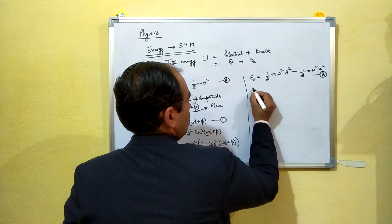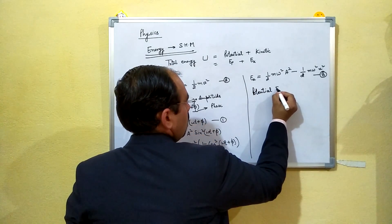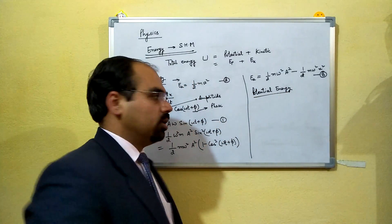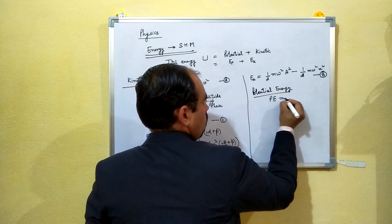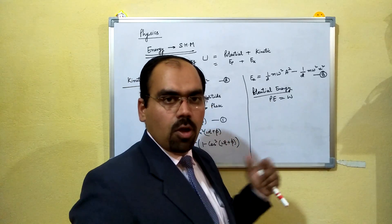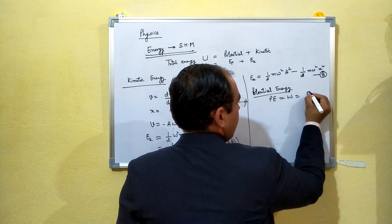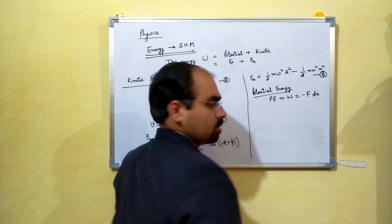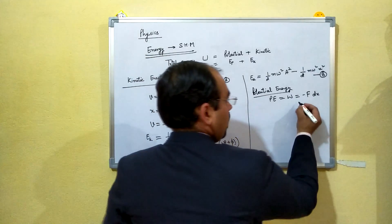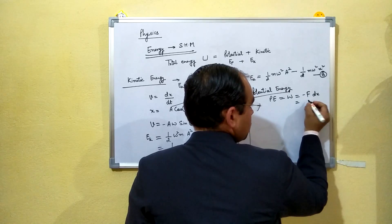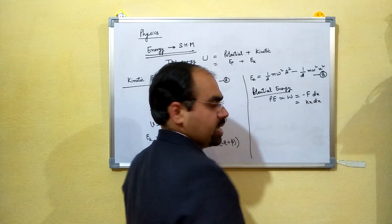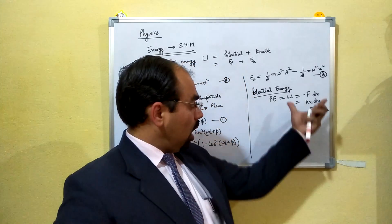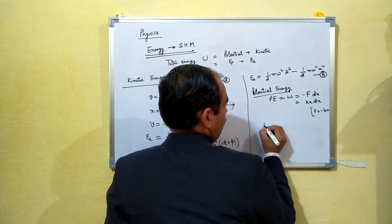Now let's get the value of potential energy. Work done can be stored in the form of potential energy. The work done against the restoring force is F·dx, and since the restoring force F equals minus kx, we write the work done as kx·dx. Integrating this gives us the total potential energy.